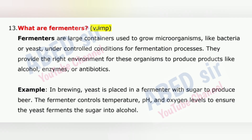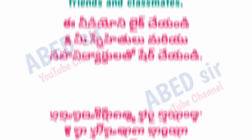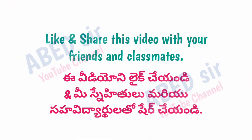Next important question is 13: What are fermenters? Fermenters are large containers used to grow microorganisms, like bacteria or yeast, under controlled conditions for fermentation processes. They provide the right environment for these organisms to produce products like alcohol, enzymes, or antibiotics. For example, in brewing, yeast is placed in a fermenter with sugar to produce beer. The fermenter controls temperature, pH, and oxygen levels to ensure the yeast ferments the sugar into alcohol.